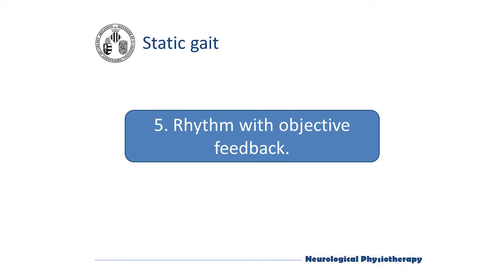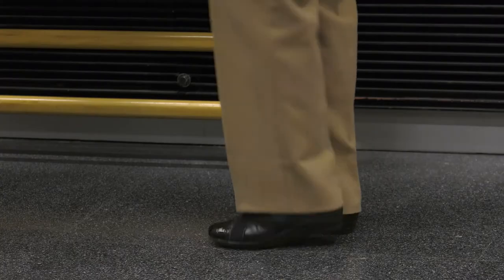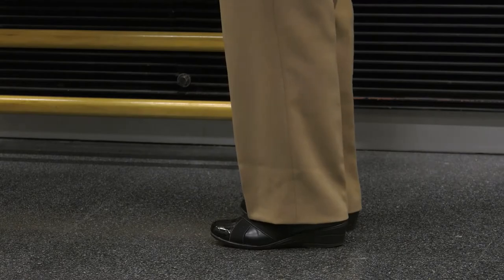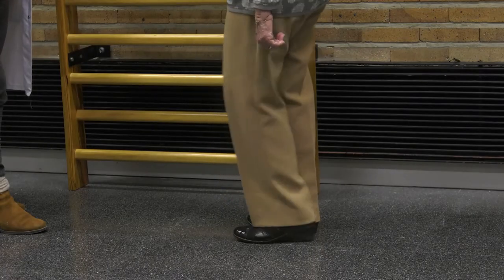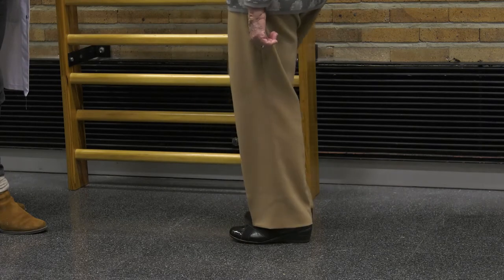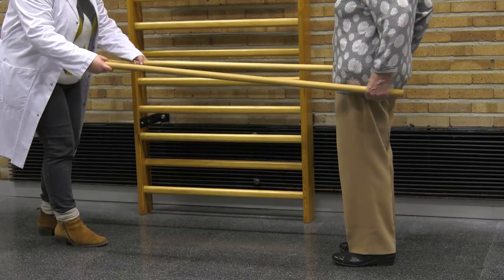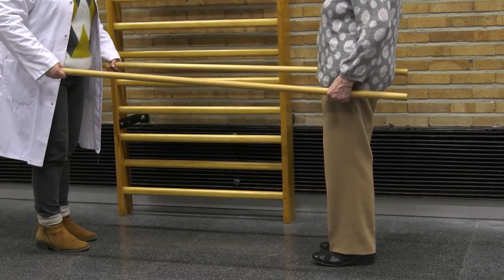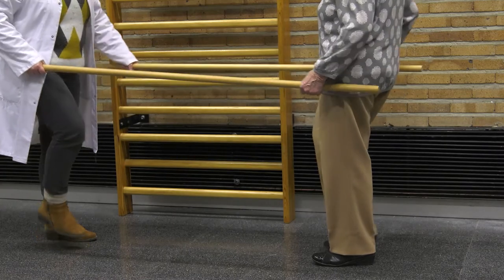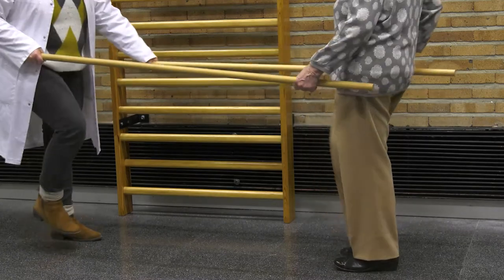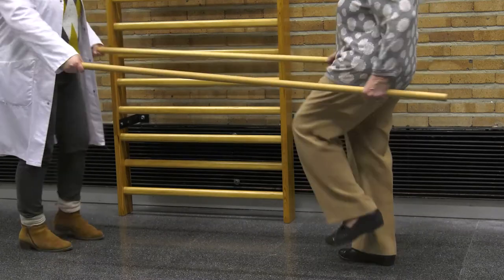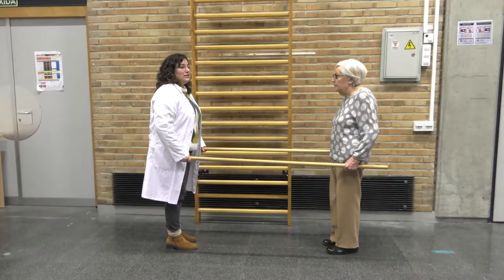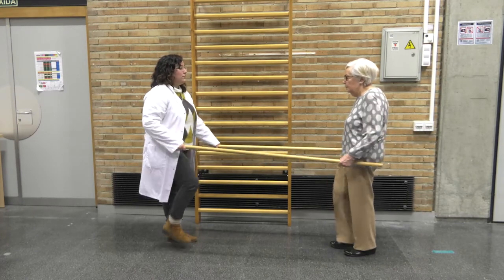Rhythm with objective feedback. We use an objective feedback like a metronome to mark the patient's rhythm. The number of steps per minute will depend on the speed the patient has and on the length of the steps. Keep in mind that the normal speed is over 1.20 meters per second and that we usually do around 100 steps per minute. Remember that in Parkinson's disease patients take many steps but short ones, and this is precisely what should be avoided. Start by training a slow rhythm like 60 beeps per minute up to 100 steps per minute. You can combine this exercise with the movement of the arms, which will make the patient incorporate the rhythm on the whole body.